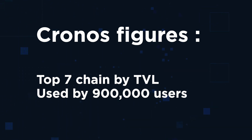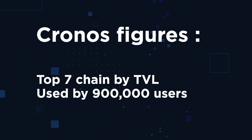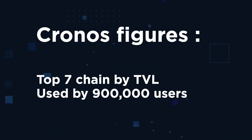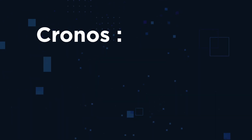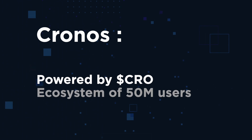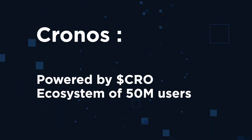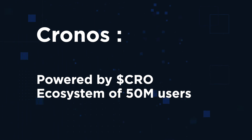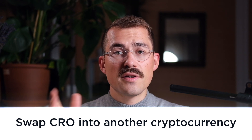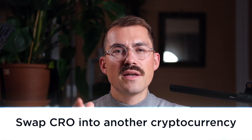Chronos has already skyrocketed to the top seven position among all chains by total value locked and is used by more than 900,000 users, growing at a double-digit rate per month. Chronos is powered by the CRO cryptocurrency, which powers an ecosystem of more than 50 million users worldwide. Now let's get back to the tutorial.